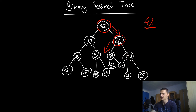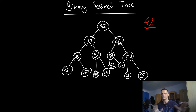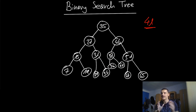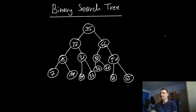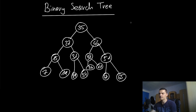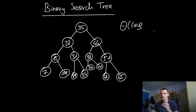Next you look at 46 and know that 41 is less than 46, so it must be to the left — you can ignore 46's right subtree. You go to 37, then find 41. At every step, by going left or right you're eliminating all the nodes on the other side. This constant halving of the problem size is why you end up with log base 2 n runtime — logarithmic complexity. And if the tree is always balanced, even the worst case will be logarithmic.